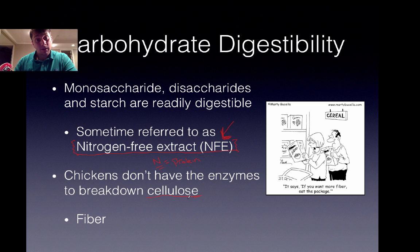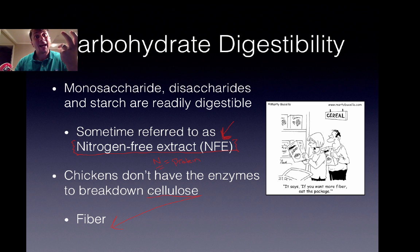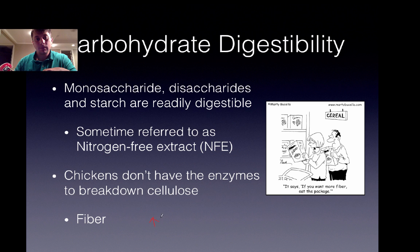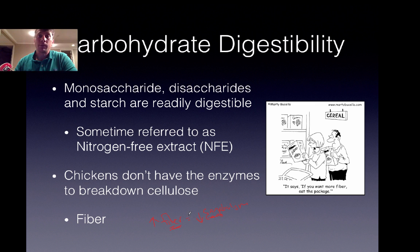Chickens don't have the enzymes to break down cellulose, which can be referred to as fiber. However, fiber can have some advantages. As consumers — American consumers — become more interested in animal welfare, fiber can play a role. For instance, if you have increased fiber in the diet, you can decrease cannibalism in birds that have not undergone beak trimming. Including fiber tends to reduce the problems associated with intact-beaked birds.